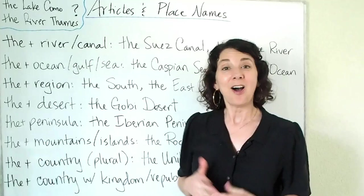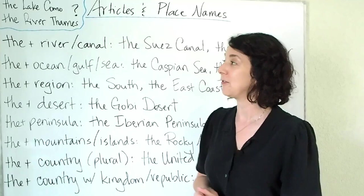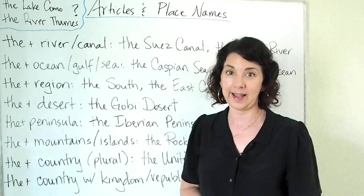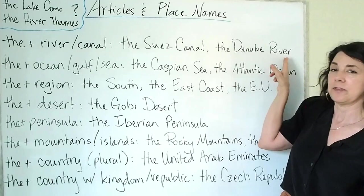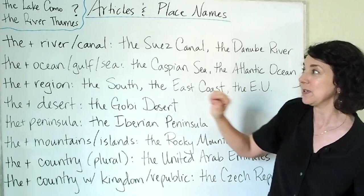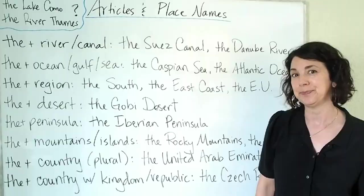Let's get started with the rules for articles for place names. The first rule is that we use 'the' with the name of a river or canal. For example, the Suez Canal and the Danube River. Usually the word canal or river goes at the end and the name goes first. However, with Thames, the name is often switched — River Thames.